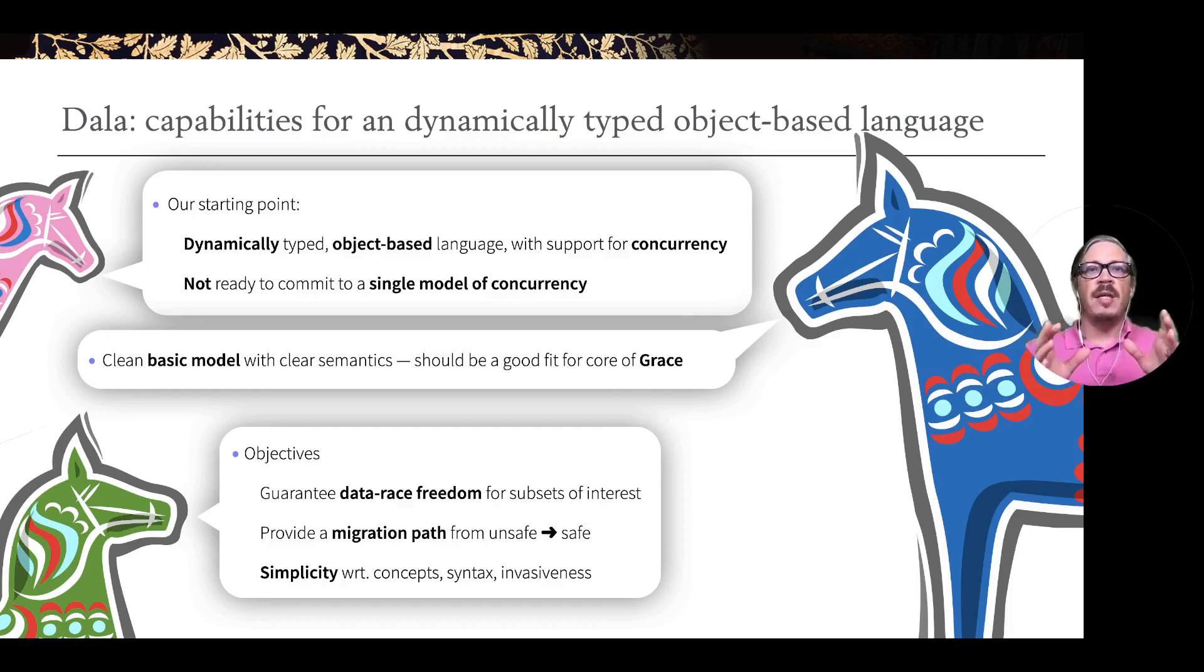Our objectives here is to provide data race freedom for subsets of interest, so parts of a program and not entire programs, in the sense of wanting to be able to take existing programs out there before the advent of the DALA capabilities and migrate them into being safe, but having these things coexist and being able to interact and link with each other.